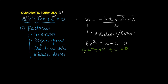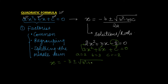Comparing with the standard form, our a = 2, b = 3, and c = −2. Substituting into the formula, we get (−3 ± √(3² − 4·2·(−2))) / (2·2) = (−3 ± √25) / 4. Using the quadratic formula, we are able to find two solutions for this equation.